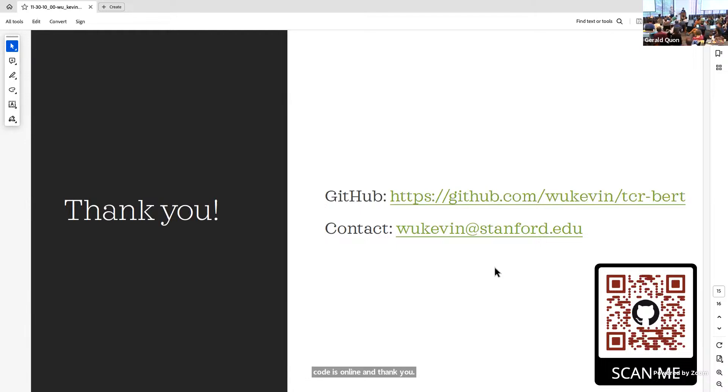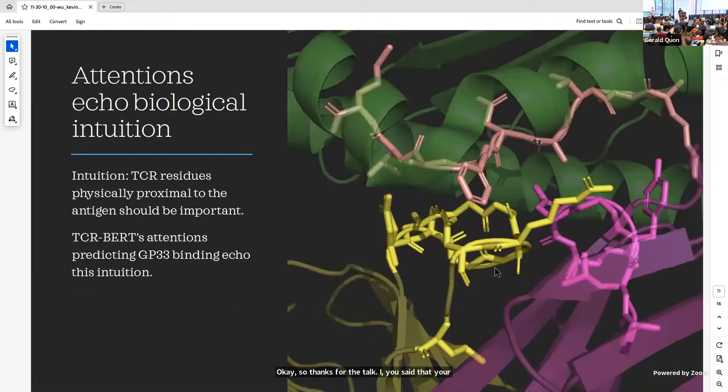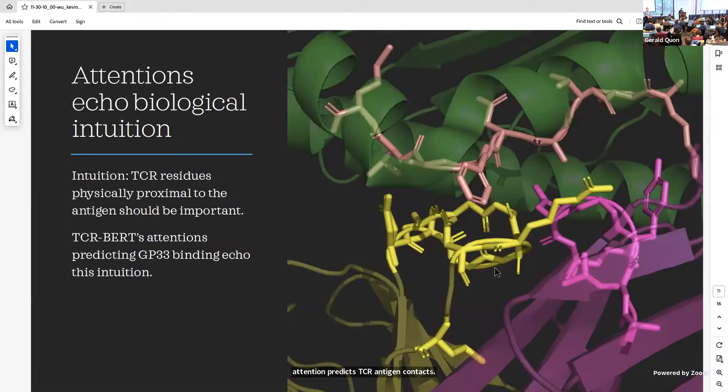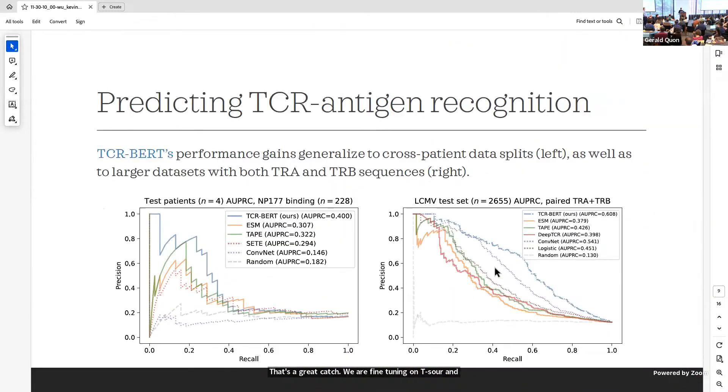We definitely have time for questions. Thank you. Thanks for the talk. You said that your attention predicts TCR antigen contacts. I was just wondering, to be clear, are you fine-tuning on the TCR antigen pairs? Because you said that earlier you were just doing SVM classifications on the representations. Or are you just feeding them in? So that's a great catch. We are fine-tuning on TCR antigen pairs for this specific analysis. This takes from this part here where we do this fine-tuning process you described, and then we pull the attention out of that. Thank you.